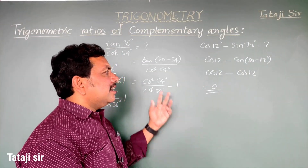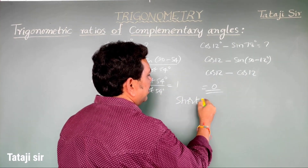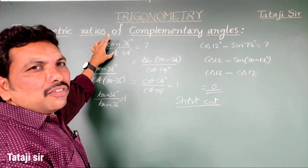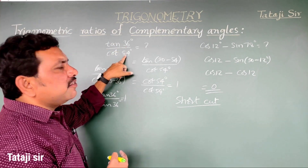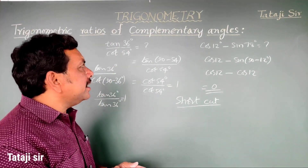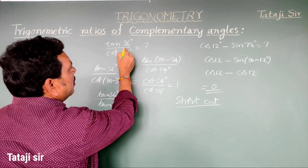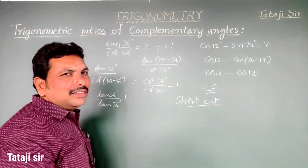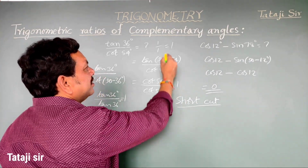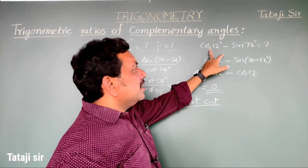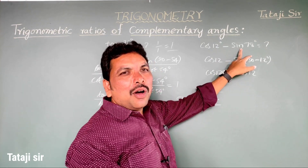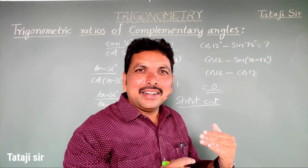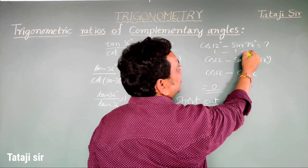Shortcut method: tan and cot are complementary combinations. When the angles sum to 90 degrees, their ratio equals 1 by 1, which is 1. For a difference like cos 12° minus sin 78°, it becomes 1 minus 1, which equals 0.